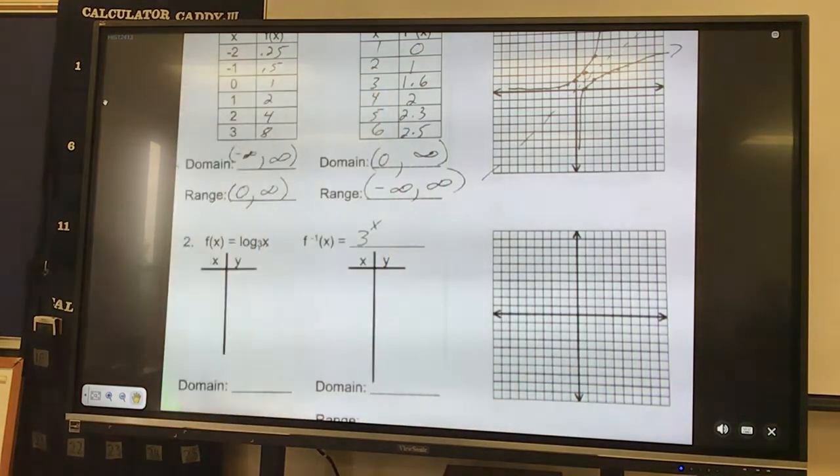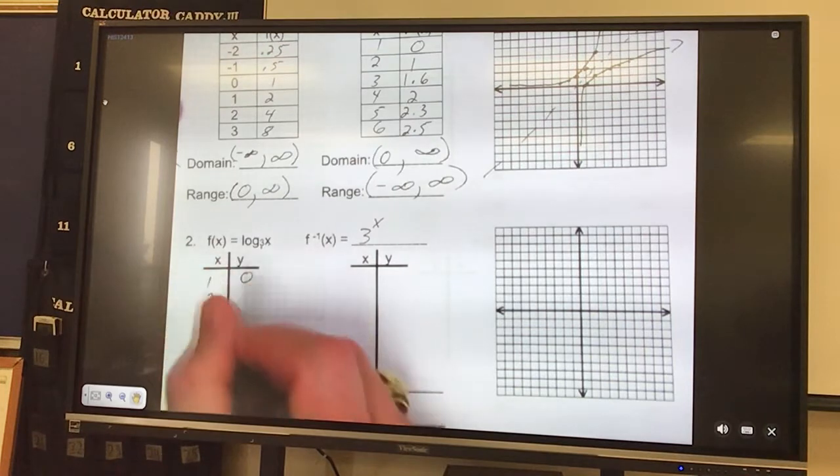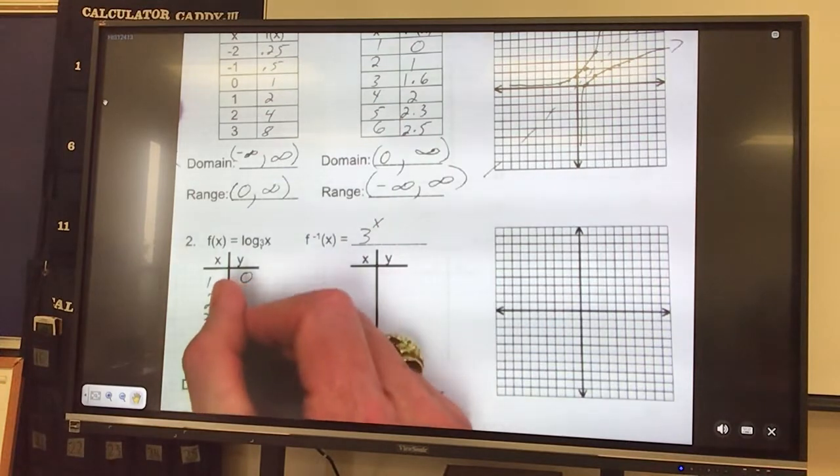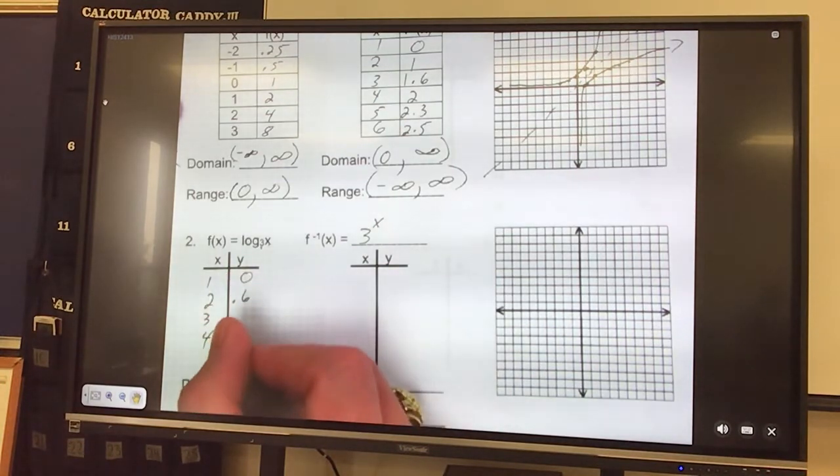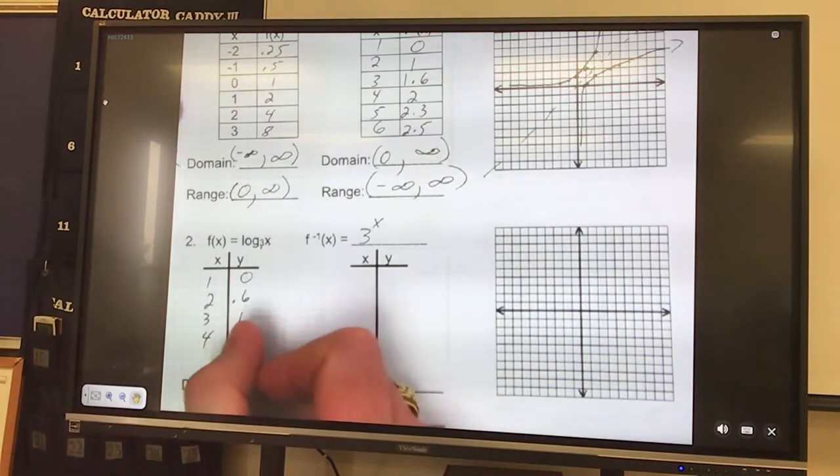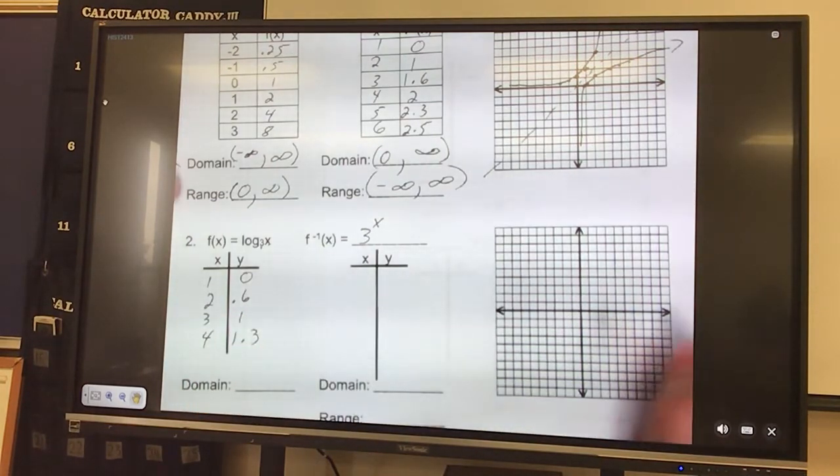So over 1 is 0, 2 is 0.6, 3 is 1, 4 is 1.3. Let's just do 4 points on this one. Over 2 up 0.6, over 3 up 1, over 4 up 1.3. Let's graph it. 1, 0, put a point. Over 2 up 0.6, over 3 up 1, over 4 up 1.3.